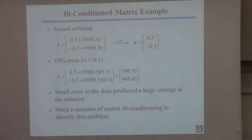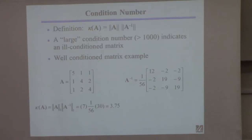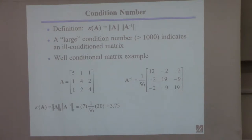To do that, we're going to introduce this thing called the condition number, and it's going to be defined in terms of the matrix norm. Kappa is the notation used here — it means the condition number of the matrix A. You take the norm of the matrix A and multiply it times the norm of the inverse of the matrix A. To compute this by hand, you need to know the matrix A and its inverse.